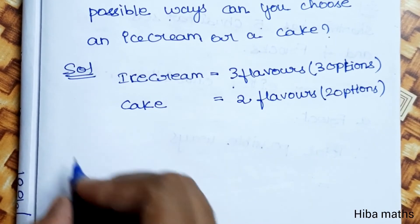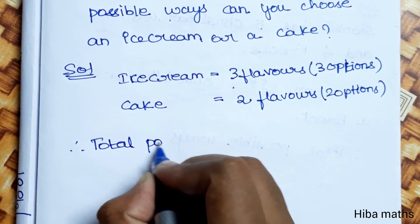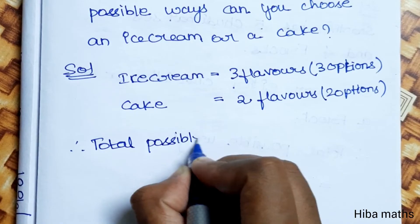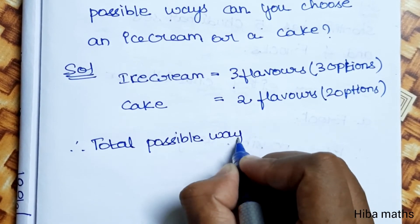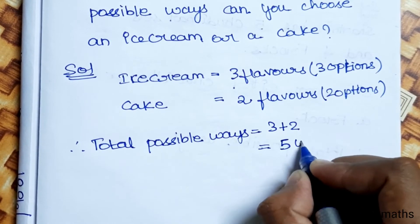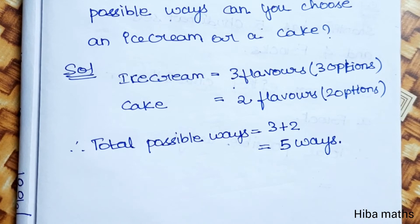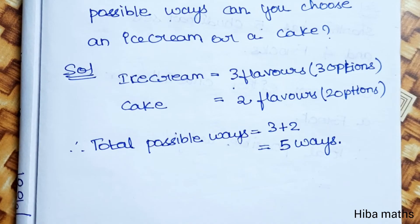So the total possible ways: 3 plus 2 equals 5. The total is 5 ways we can select. If you understand this, you can solve the exercise using this formula. Thank you so much for watching.